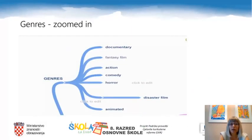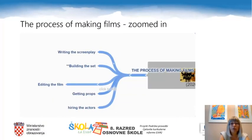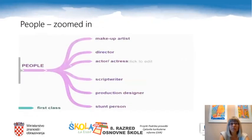As for genres, there are documentary, fantasy film, action, comedy, horror, disaster film, and animated film. The process of making films includes writing the screenplay, building the set, editing the film, getting props, and hiring the actors. People involved are makeup artist, director, actor or actress, script writer, production designer, and stunt person.